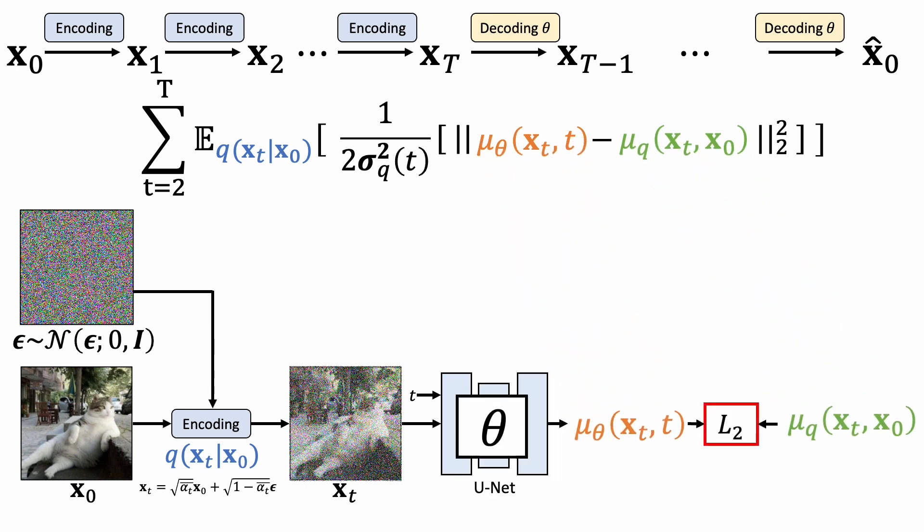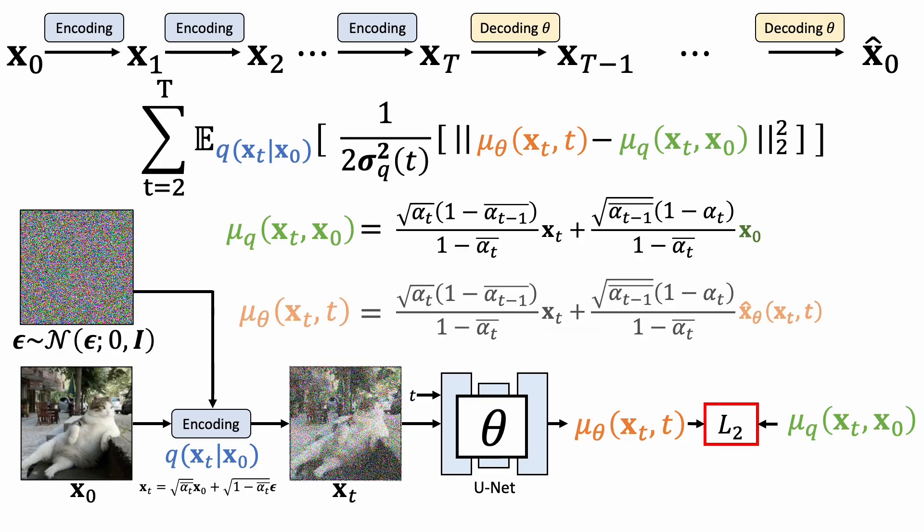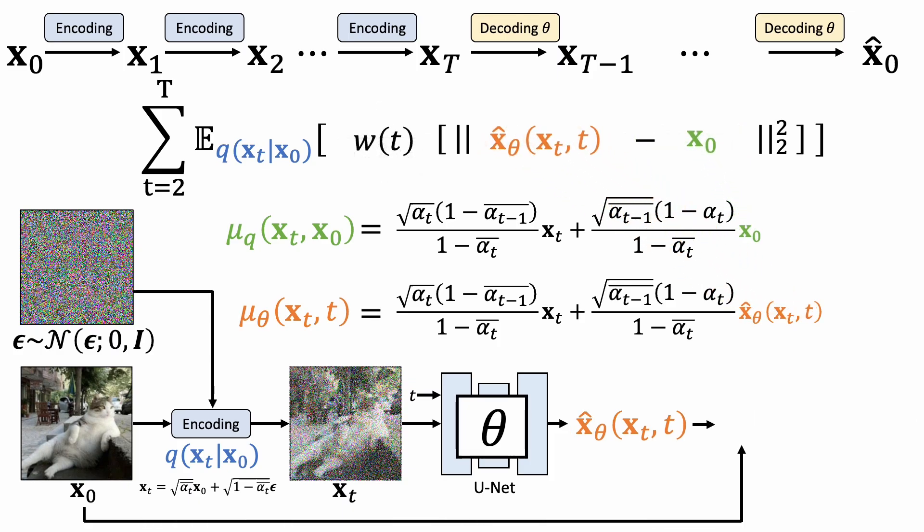By looking at this training objective, we can have three interpretations. First, from the ground-truth mean, we see a linear combination of noisy image xt and clean image x0. But why do we ask the denoising network to predict noisy image xt that we already know from the input? Therefore, we express the estimated mean as the form of the ground-truth one, and only ask the model to predict the clean image x0.